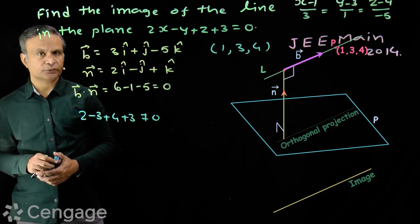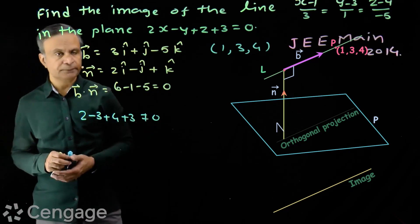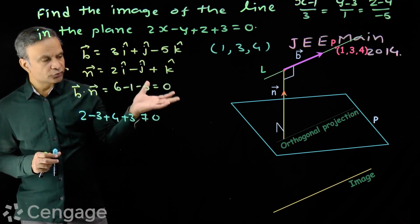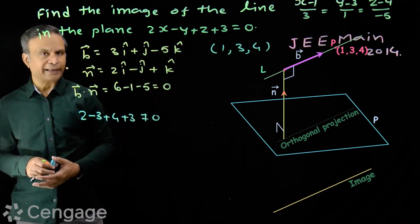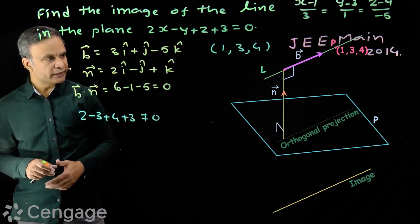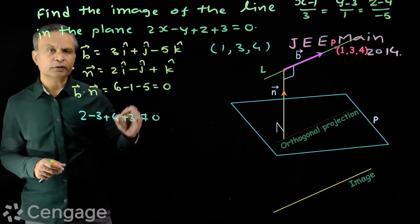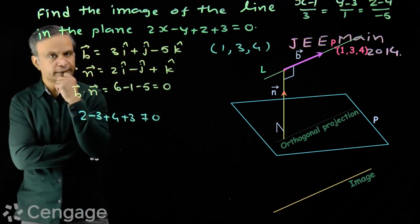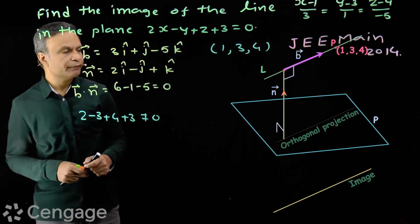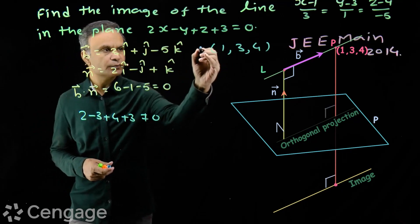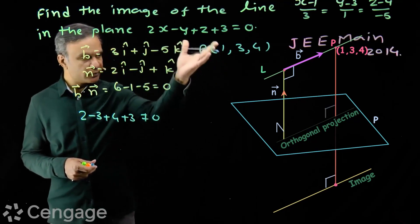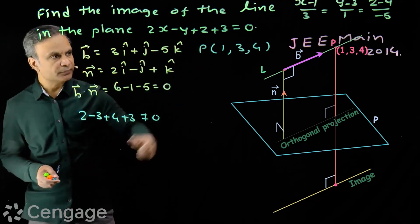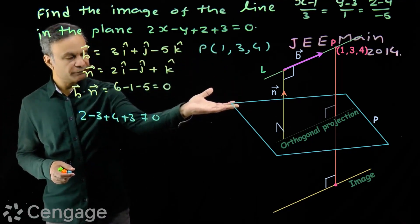Direction ratios of image will be the same. Image ke direction ratios toh same hoge na? Because both these lines are parallel. So, now we need to find one point on the image. Hame image line ke par eek point chahiye. Kise nikalayenge? It's simple. We find the image of this point. Image of this point in the plane or reflection of this point in the plane. Hame is point ka is plane me reflection nikalayenge.